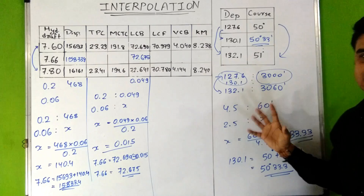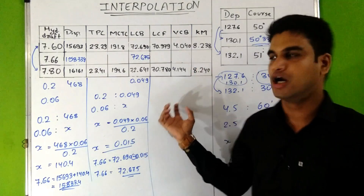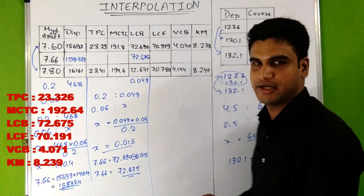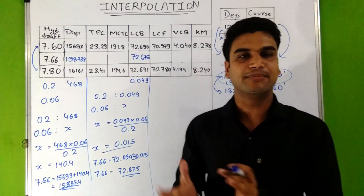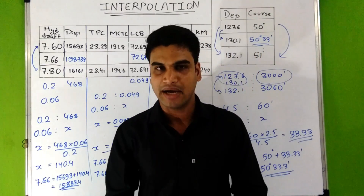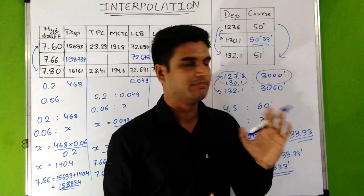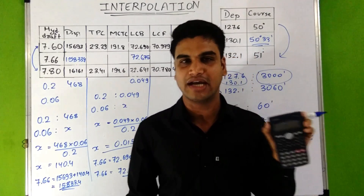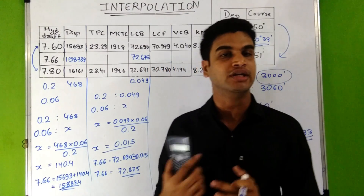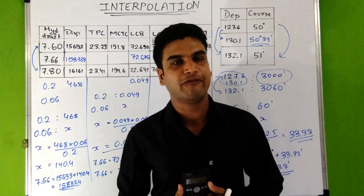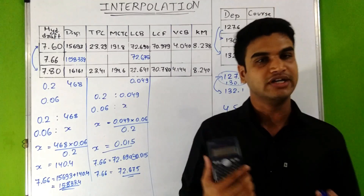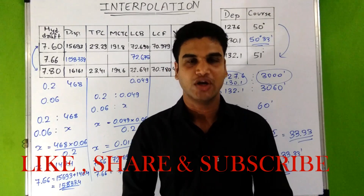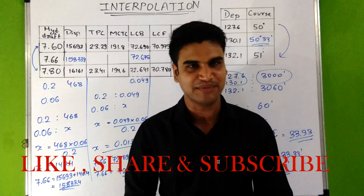You can verify this question from the textbook on page 35, and the MV Hinge ship question is on page 12. I encourage you to find the values of the remaining terms as practice. This was the process of manual interpolation for stability and practical navigation. In my next video I will show how to use your scientific calculator directly for interpolation without pen and paper — so please keep your calculator ready. Please like, share, and subscribe. Thank you.